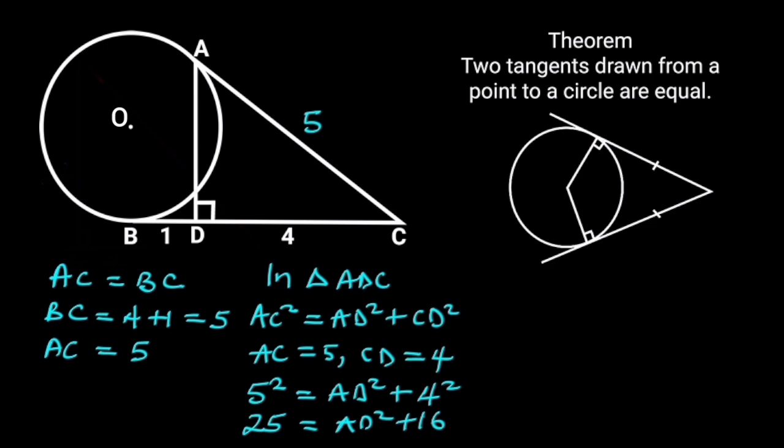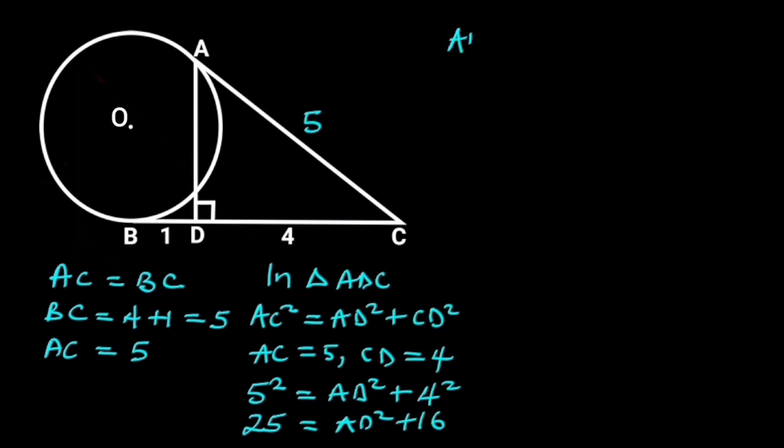If we make AD squared the subject, we will have AD squared is equal to 25 minus 16, and this will give us AD squared is equal to 9. If we take the square root of both sides, we will have AD is equal to 3.